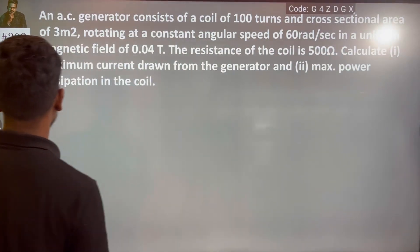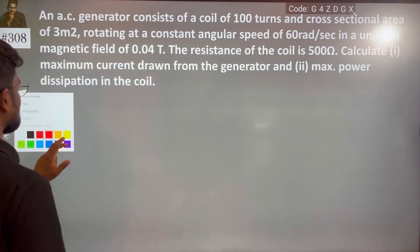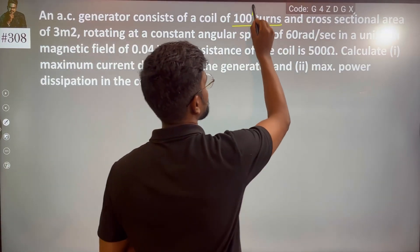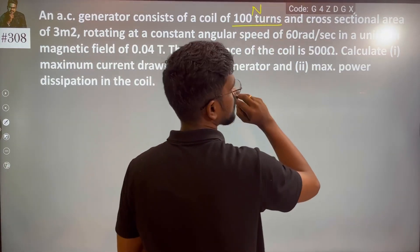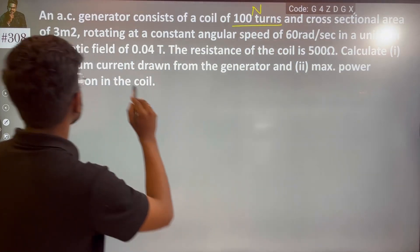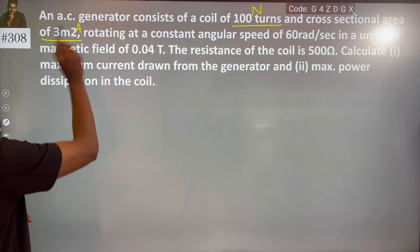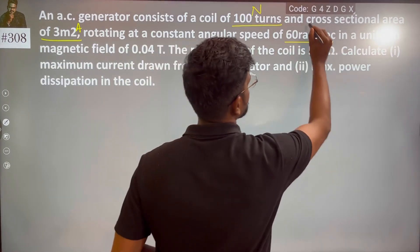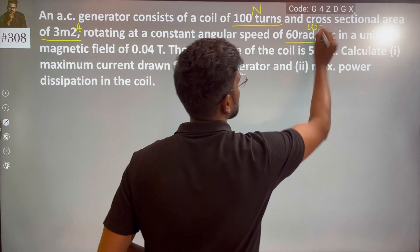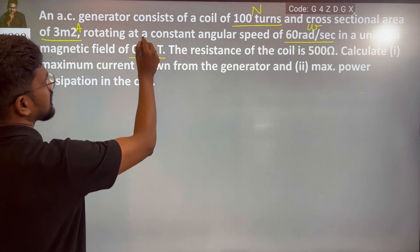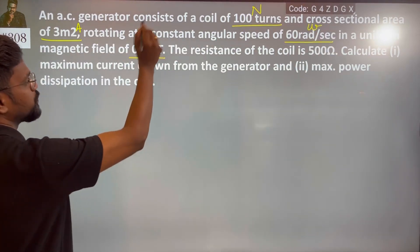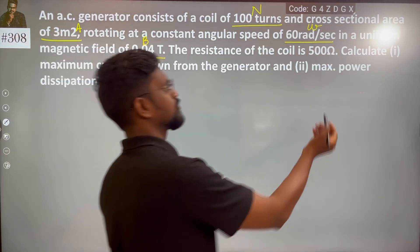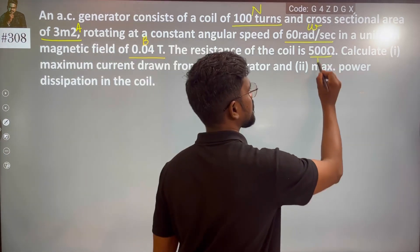So, we have the given data: number of turns N, area A, angular speed omega, magnetic field B, and also the coil has a resistance.